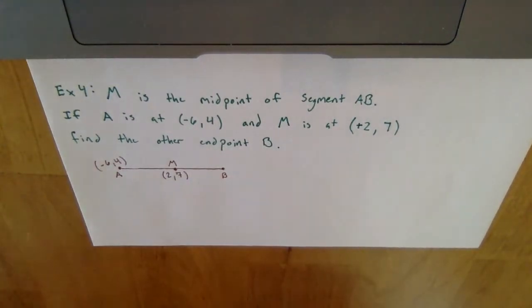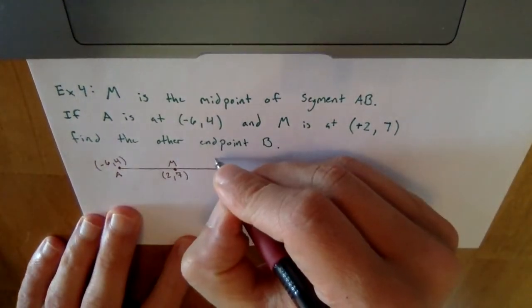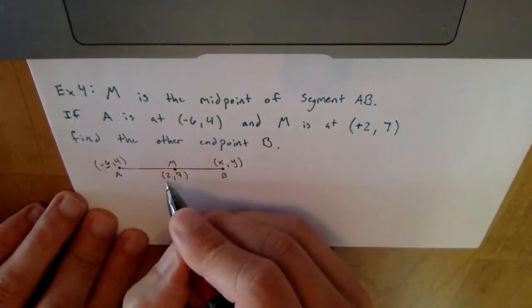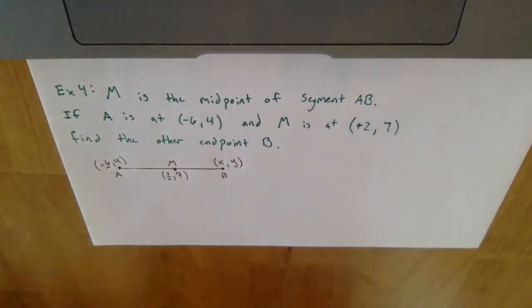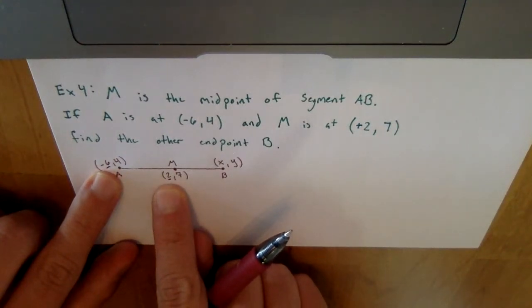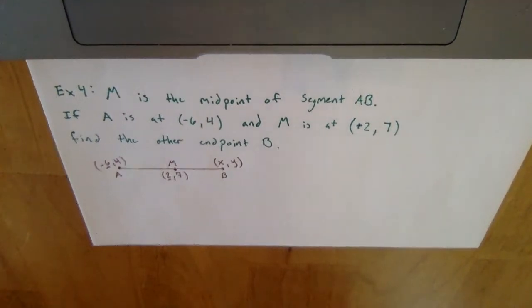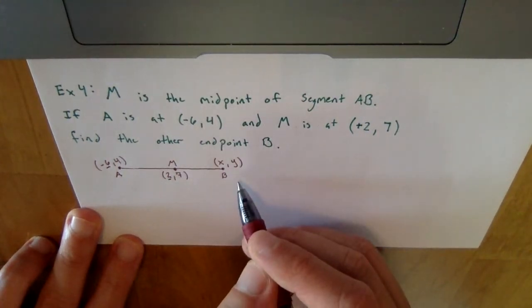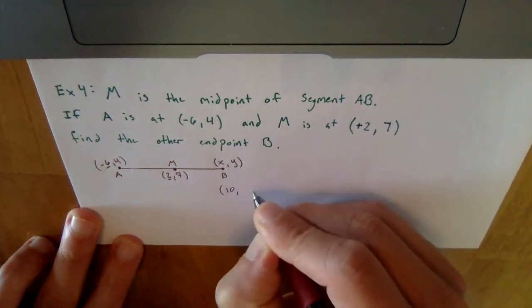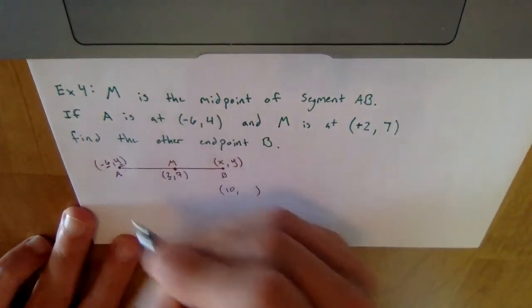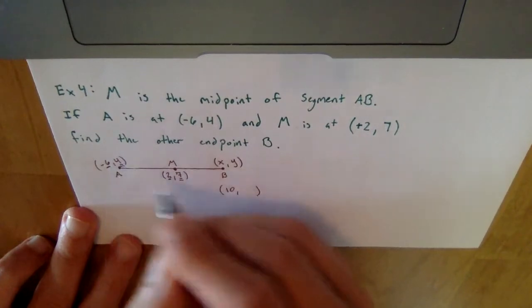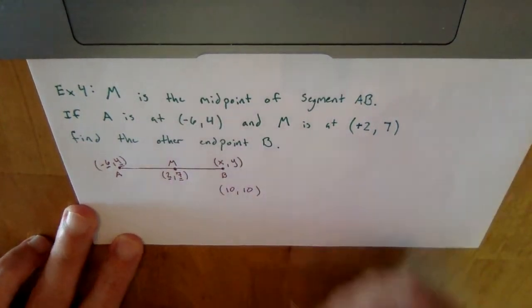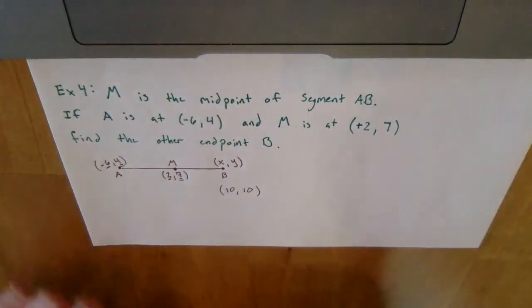Look at the x and y values separately. For x: going from negative 6 to positive 2 is adding 8 units. To find the other endpoint, add another 8, which gives x equals 10. For y: going from 4 to 7 is adding 3. Add another 3 to get y equals 10. So the other endpoint B is at (10, 10).